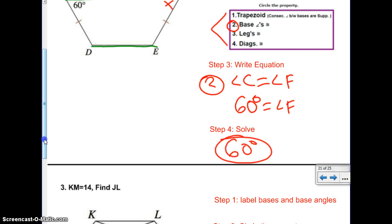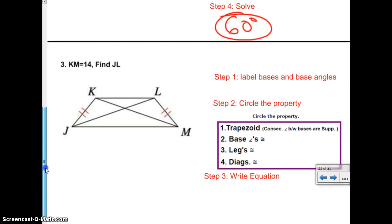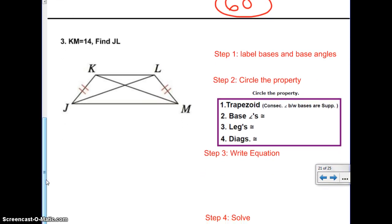Well, that's kind of convenient, Mr. Elizondo. Well, let's see number two. Number two says KM, which is this right here, equals 14, and they want us to find JL in the green. Well, we can still label our bases and our base angles. KL is a base, JM is a base.